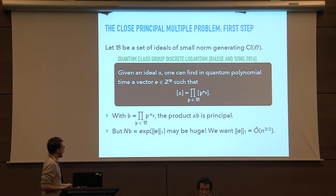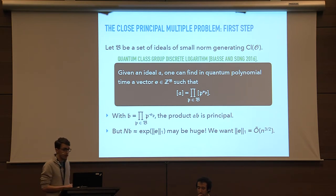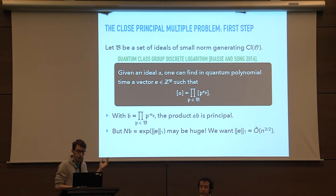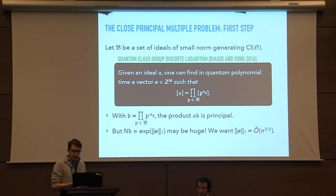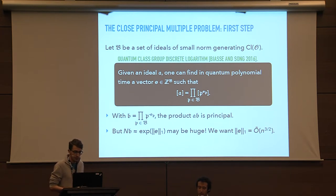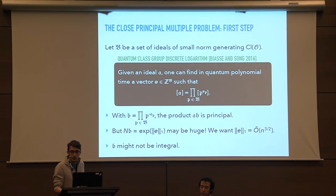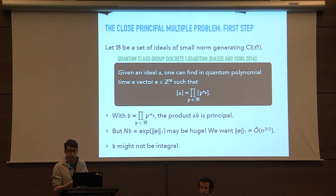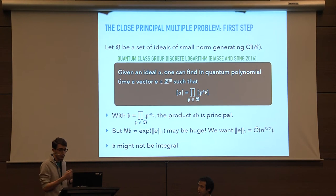The problem is that the norm of B will be huge. B is a product of small ideals, but a product that contains a lot of factors. The norm of B will be exponential in the L1 norm of our vector of exponents, and we want this L1 norm to be big-O of n to the three-halves to reach our target. Another problem is that B might not be integral — you might have negative exponents — and if B is not integral, then the product AB will not be a subset of A, so you won't find a short generator that is also in the lattice A.